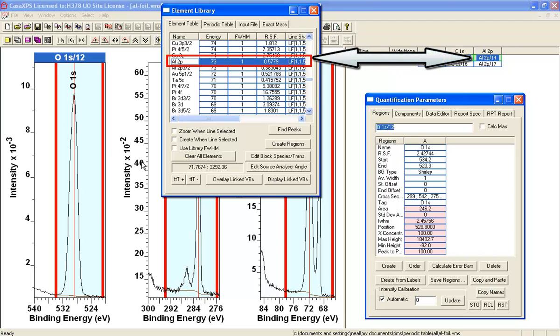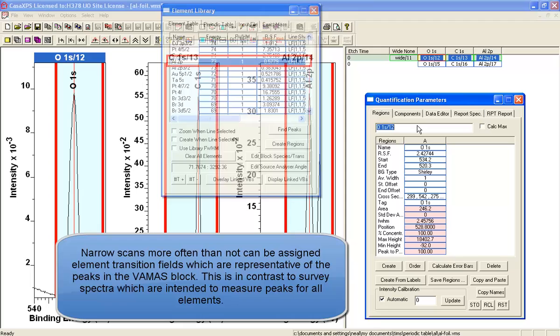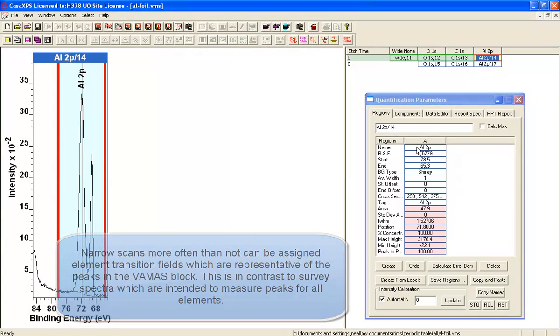in terms of oxygen 1s, carbon 1s and aluminum 2p has allowed the element library to load the appropriate sensitivity factors for these elements.